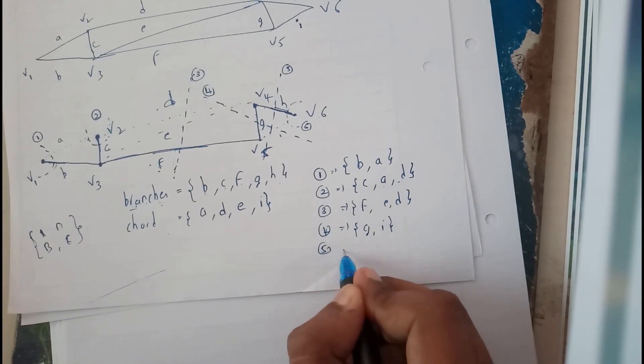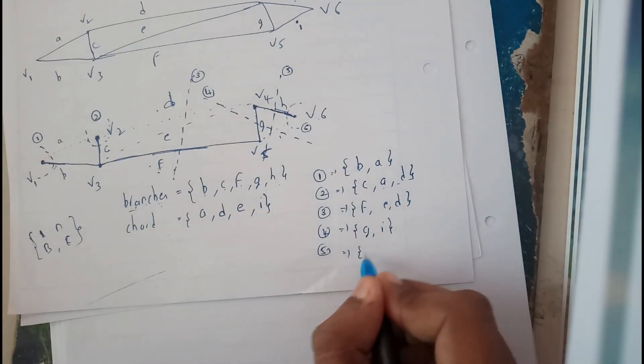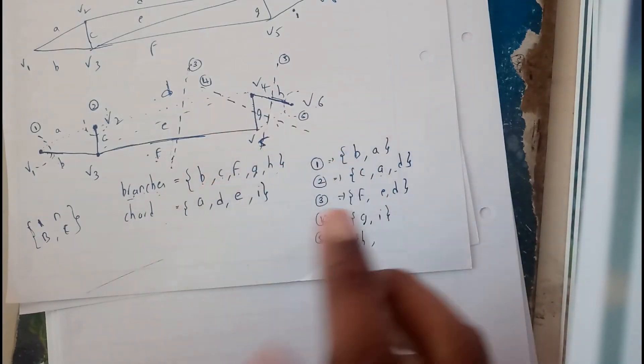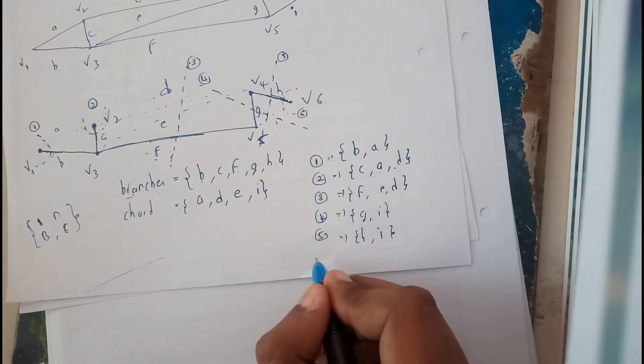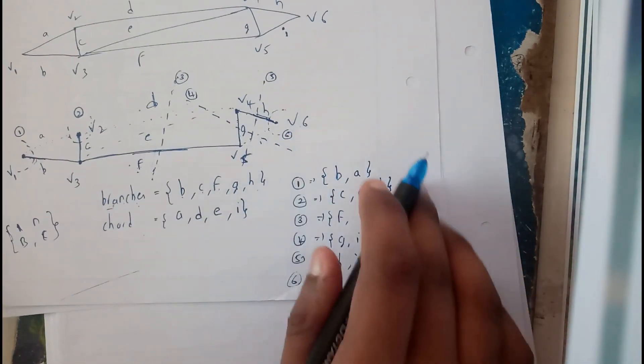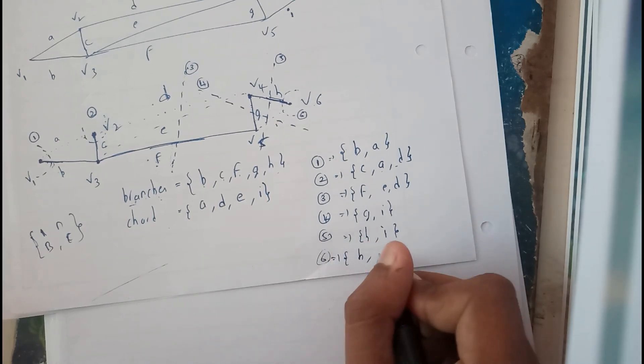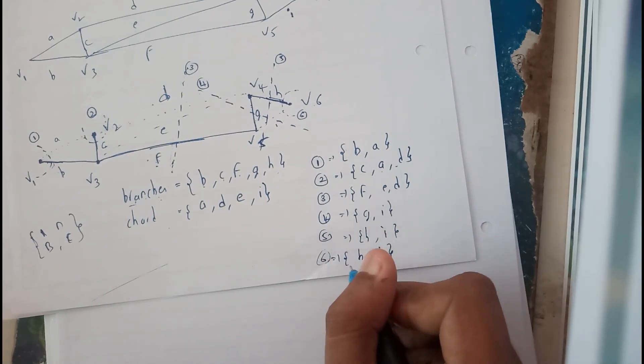Fifth, it is passing through H and it also has the same chord I. Sixth, we are having H as the branch and I as the chord. So all these six are the cut sets for this graph.